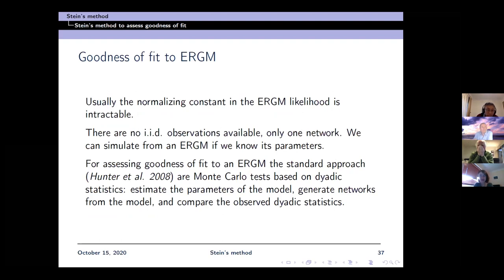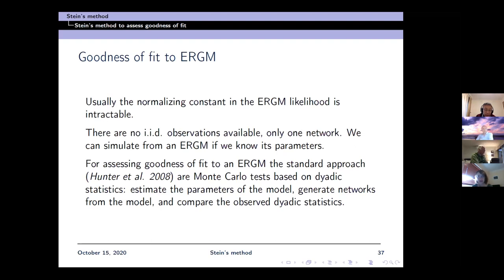For exponential random graph models, we have the intractable likelihood, so we use our Stein operator and Stein characterizations. A main issue is that we do not usually have i.i.d. observations — we only have one network. We can simulate from an ERGM if we know its parameters. The standard approach for assessing goodness of fit to an ERGM comes from Hunter et al.: Monte Carlo tests based on dyadic statistics such as edgewise shared partners. Parameters are estimated, networks are generated from the model, and observed dyadic statistics are compared. There are also approaches using spectral summaries.